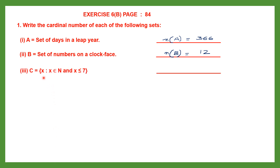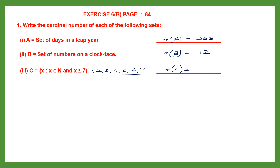Question C is given in set builder form, so we have to find the elements first and then count. X is such that X belongs to natural numbers and X is less than or equal to 7. We write all natural numbers up to 7: 1, 2, 3, 4, 5, 6, and 7. There are 7 numbers, so the cardinal number of set C is 7.